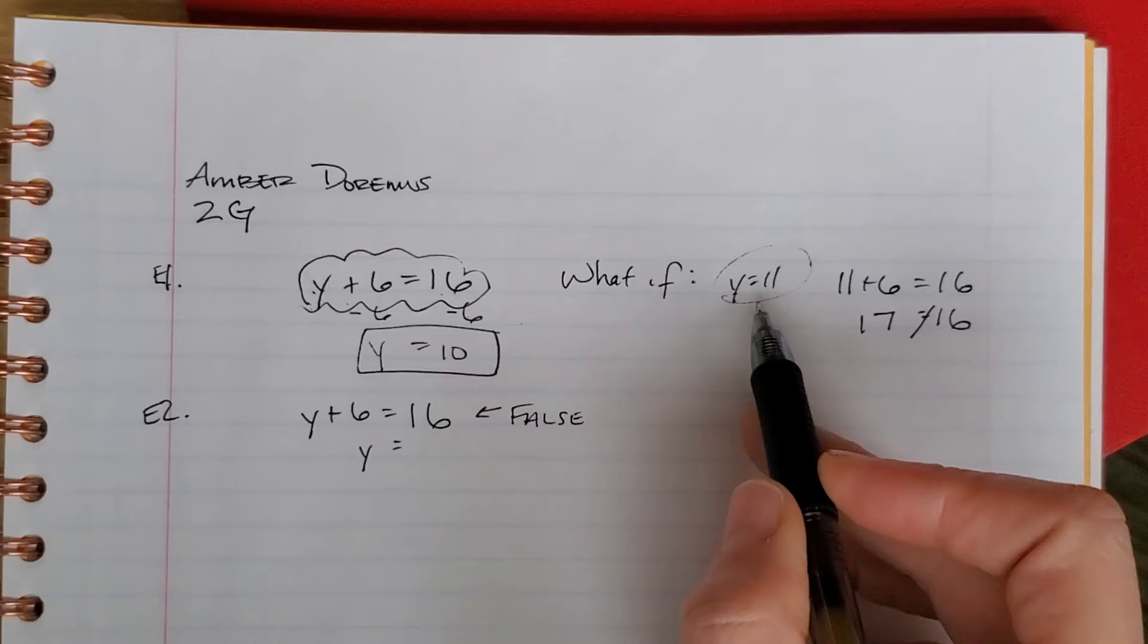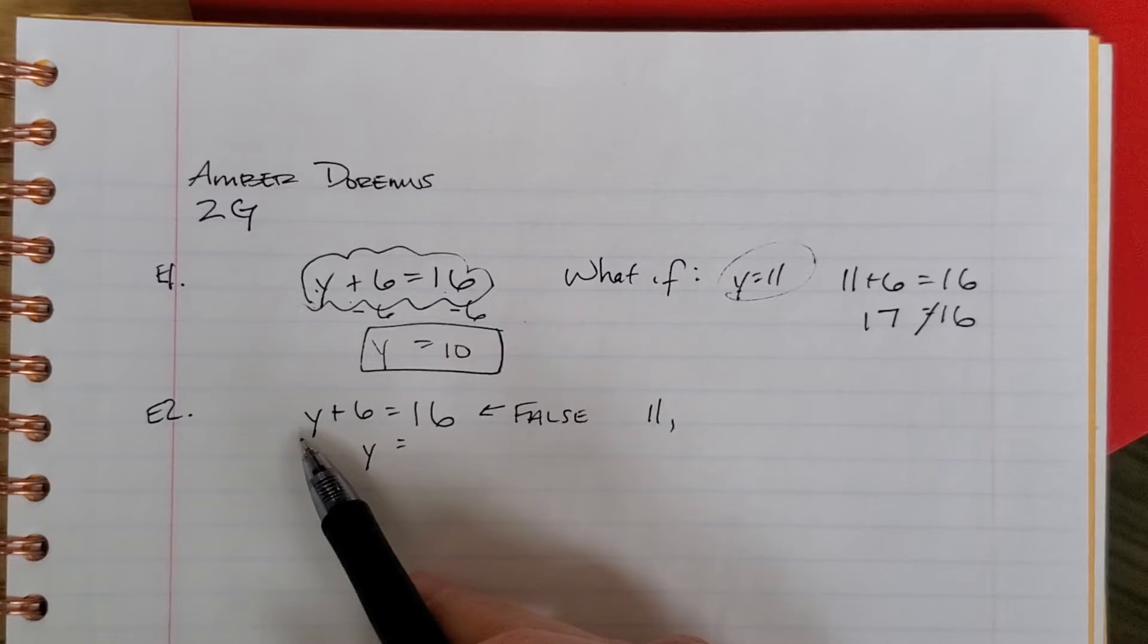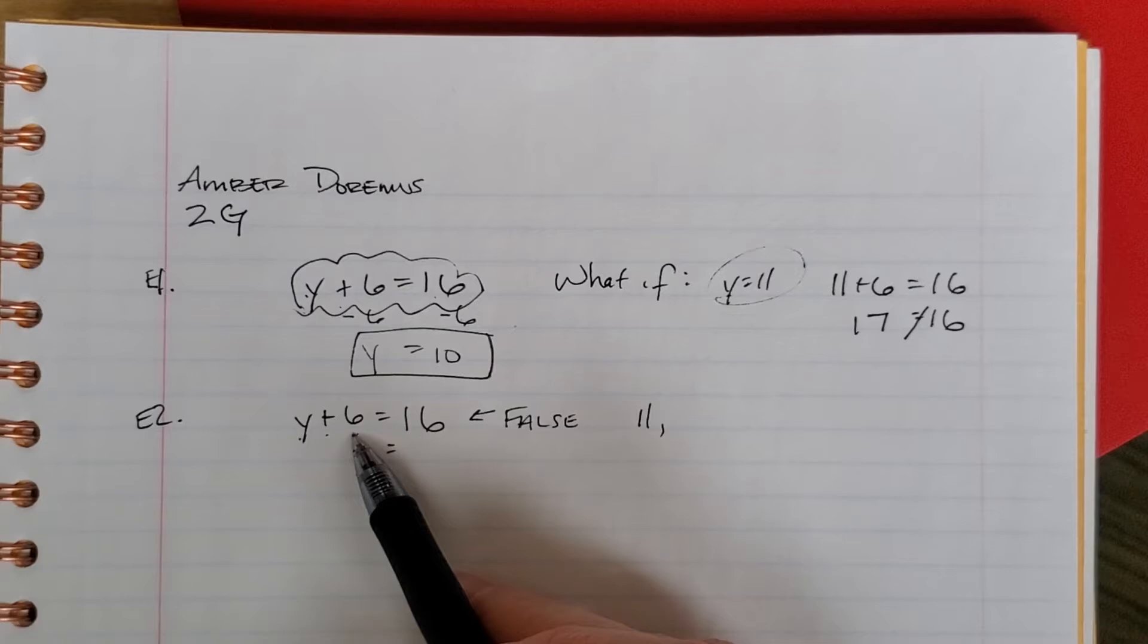Well, we already know that if y equals 11, it would be false. Are there any other numbers that we could substitute in for y that would make it false? How about 1? 1 plus 6 is 7. 7 doesn't equal 16. Oh, 1.